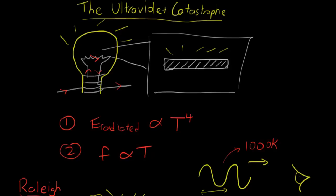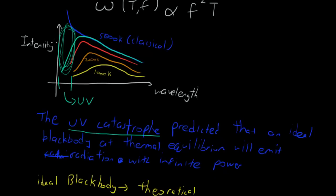Welcome back to the next lesson in the Modern Physics Playlist. Today we'll be continuing on the ultraviolet catastrophe. In the previous segment, I talked about the problem that arose from the ultraviolet catastrophe — the difference between the theoretical curve of how the curve should act in the ultraviolet spectrum and the actual experimental evidence. The UV catastrophe stated that ultraviolet waves should dominate because of this curve, which goes all the way up to infinity. We know this isn't true because through experiments, scientists found that this light blue curve is actually the case, not this dark blue curve.